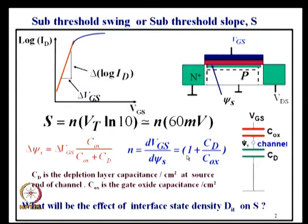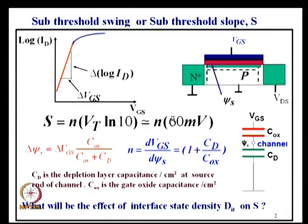You can see that if the depletion layer width is smaller, C_d will be larger and n will become larger — indicating the sub-threshold slope will be much more. You want n as small as possible; ideally 1. You will never get 1, but with some special structures n can be brought very close to 1, like 1.01.